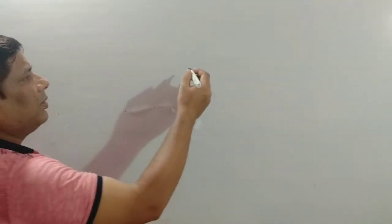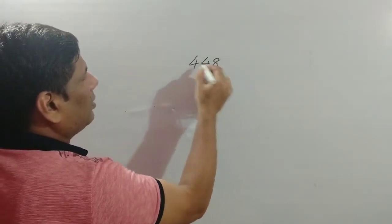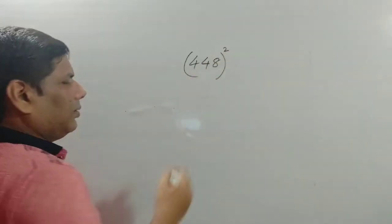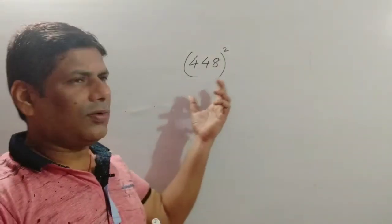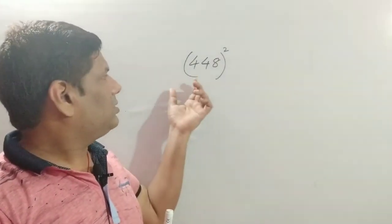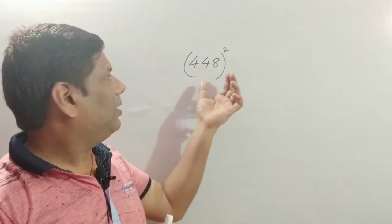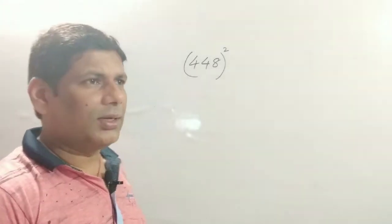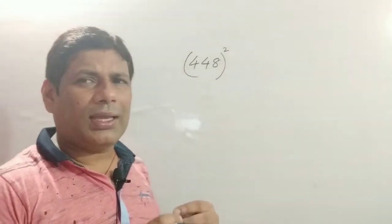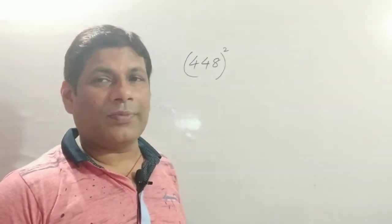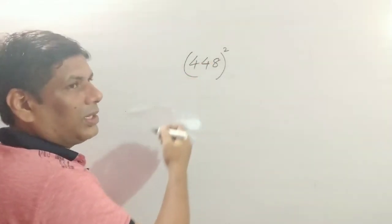Let's see another example. I'll take 448 squared. But this number is far from both 400 and 500—it's 48 from 400 and 52 from 500, so it would be hard to calculate. Instead, I'll use a multiple of 50.